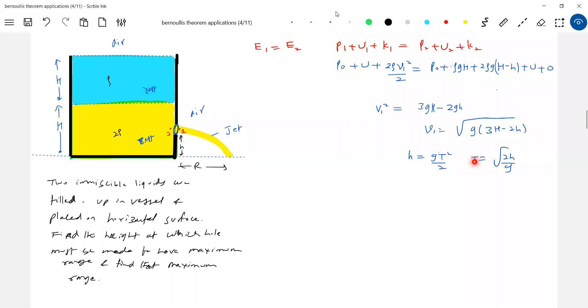What is the expression for range? Range should be equal to V1 into T. This should be equal to root(2g(3 capital H minus 2h)) into root(2h/g). When g gets eliminated, the expression for range will be root(6 capital H h minus 4h square). Let's differentiate this.